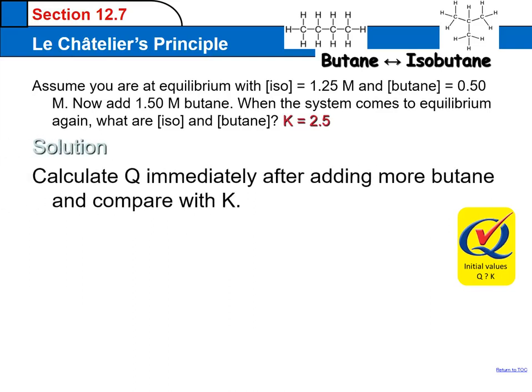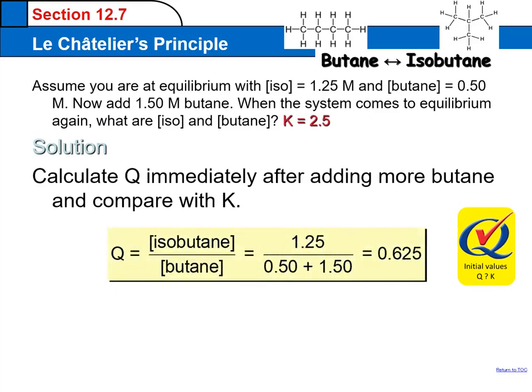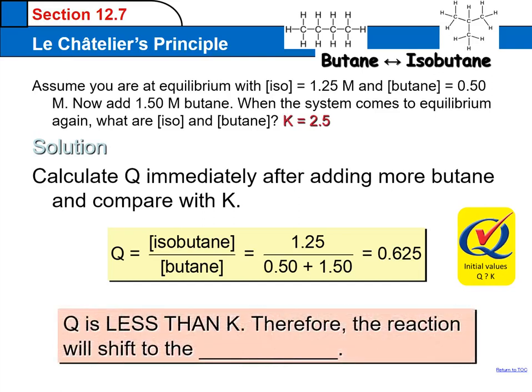I'm going to teach my students to think about what I call a Q-check. We're going to compare Q, the concentrations of the product and the reactant right at the beginning, set up just like an equilibrium expression. Concentration of products over concentration of reactants. I have 1.25 molar of the product, but I'm going to have in total now 0.5 molar plus 1.5 molar, a total of 2 molar of the reactant. So Q equals 0.625, which is definitely less than K. Which way will this reaction shift?